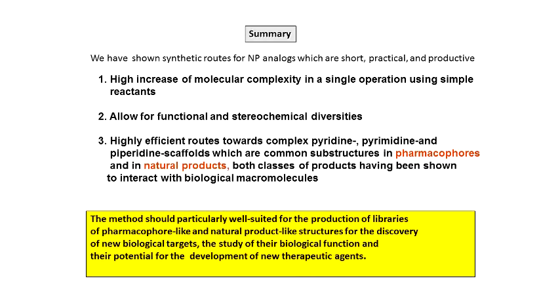That's still unpublished. To summarize: we have shown synthetic routes to natural product analogues which are short, practical, and productive. There is a high increase in molecular complexity in a single operation using simple reactions. This allows for functional and stereochemical diversity, and it is a very efficient route to complex pyridine/bipyridine scaffolds, which are common substructures in pharmacophores and natural products. This method should be well-suited for the production of libraries of pharmacophore-like and natural product-like structures for the discovery of new biological activity.